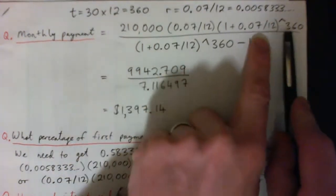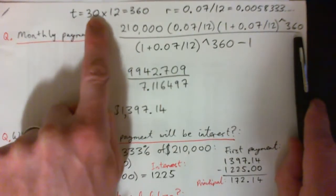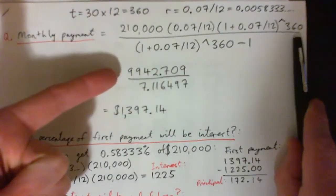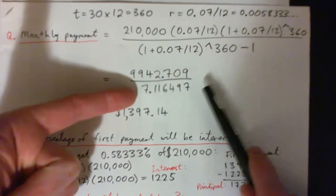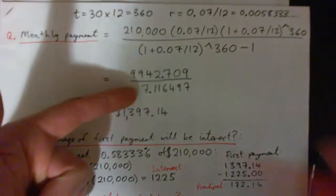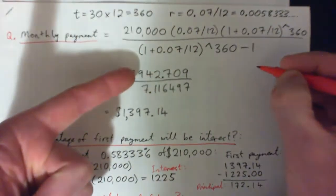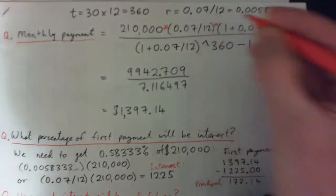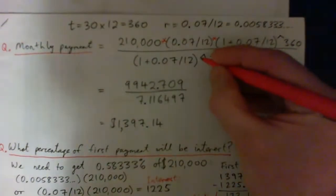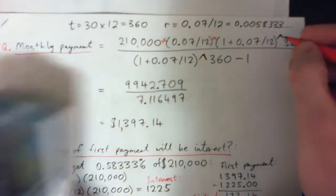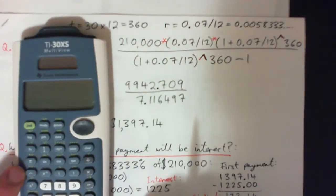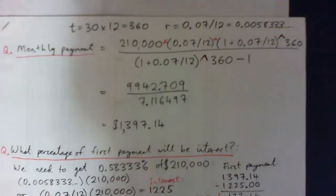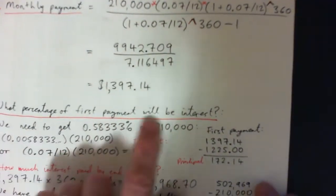It's a 30-year mortgage, so for 30 years every month we're going to make a payment — that's 360 payments overall. When you work this out you should get this on the top of the fraction and this on the bottom. You could do the whole thing as a one-line calculator entry, but make sure to put the bottom in parentheses. You may need a star for multiplication, and the little hat symbol is the exponent — on the TI-30 it's located here. In any case, our monthly payment is about $1,400.